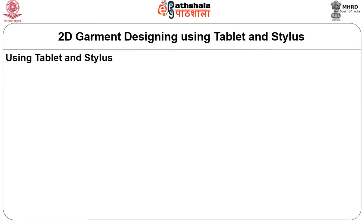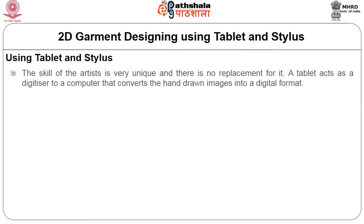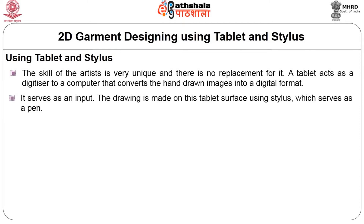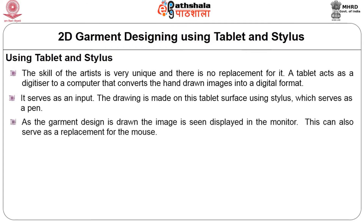Now let's talk about the second method: garment designing using tablet and stylus. The skill of the artist is very unique and there is no replacement for it. In this method, a tablet acts as a digitizer to the computer, which converts the hand-drawn images into a digital format. The tablet serves as an input and the drawing is made on the tablet surface using a stylus which serves as a pen. As the garment design is drawn on the tablet, the image is displayed in the monitor.